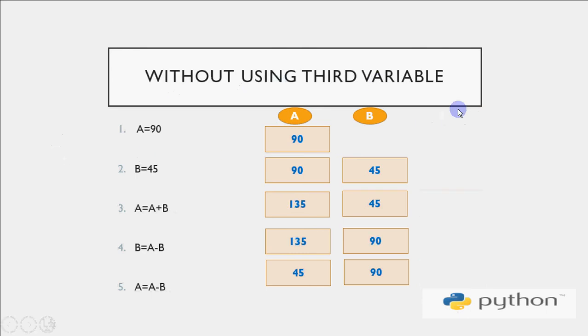So without using third variable, we don't have temp now. A is 90, B is 45. These are the initial values. What I do here is A is equal to A plus B. That means value of A and B are added and that overwrites A. In this example, it becomes 135. So now at this moment, I have sum of both the numbers and I have one number with me. So what I do is B is equal to A minus B. So this sum minus 45 will give me the other number, which is 90.